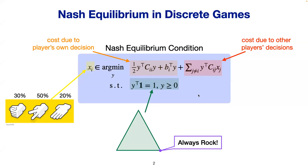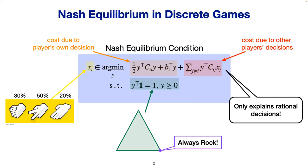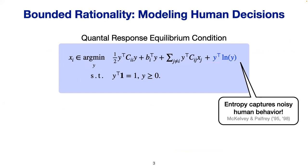The concept of Nash equilibrium says there is a state where, given the other players' decisions, player i will choose the best option by minimizing cost over the probability simplex. If this condition holds for all players, no player has any incentive to deviate. It is one of the most popular models to predict interactions in non-cooperative games — but it only predicts rational decisions and assumes each player always chooses the best option.